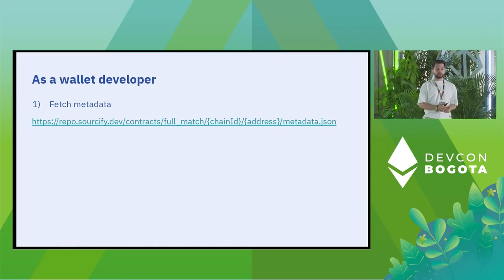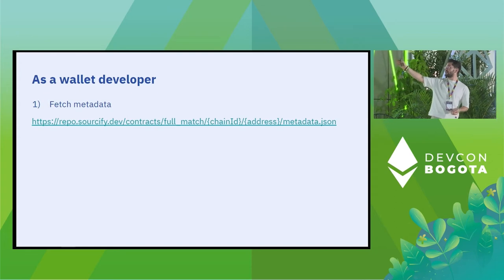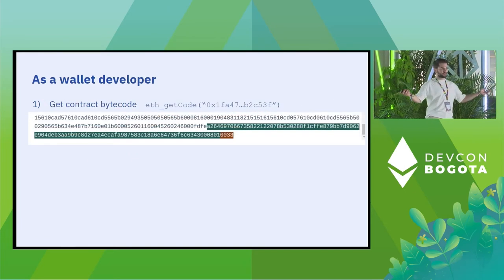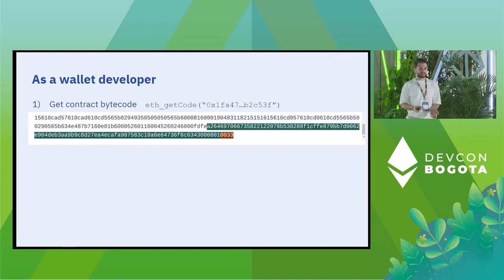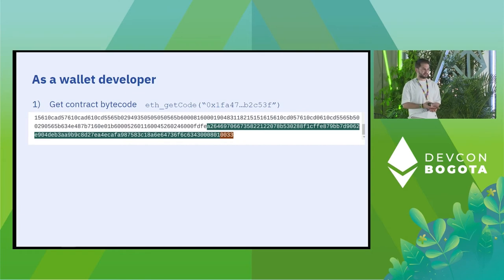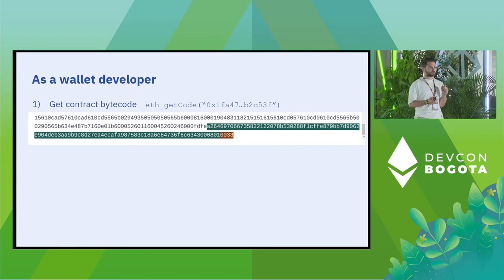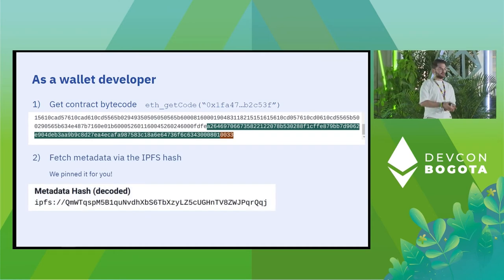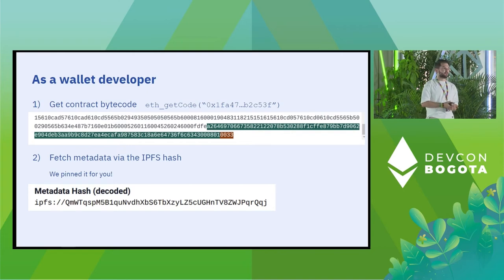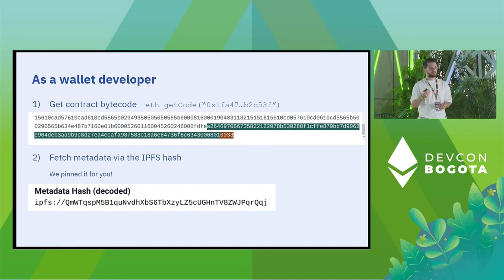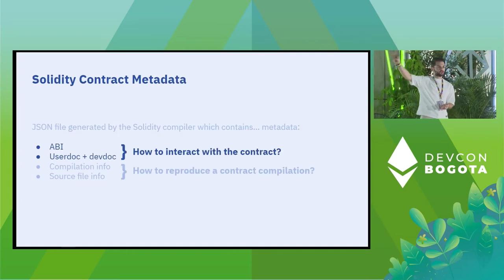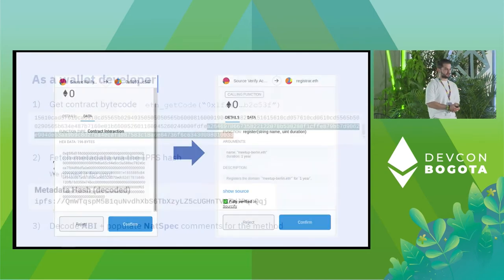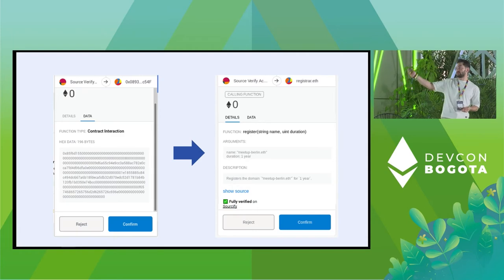As a wallet developer, you go to repo.sourcify.dev — actually, please don't come to us because it's already on IPFS and it's content addressed, so you know the file you're getting is the right file. Your wallet gets the bytecode of the contract, decodes the IPFS hash at the end of the bytecode, fetches the metadata we pinned, and the metadata file has the ABI and the documentation. Decode the ABI and populate the NatSpec comments of the contract.